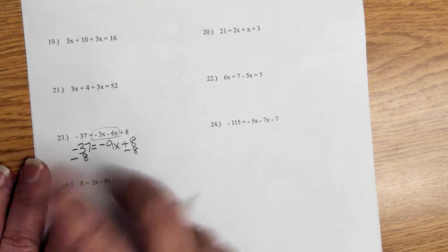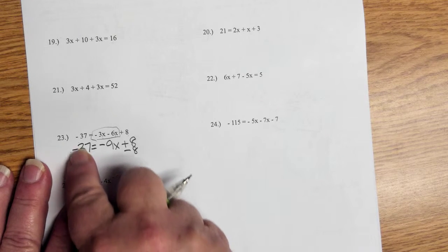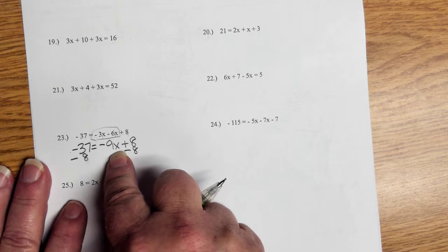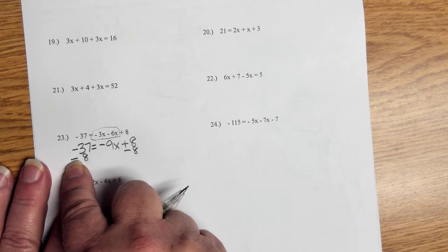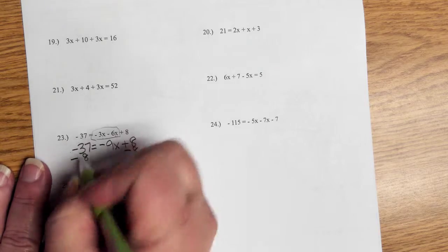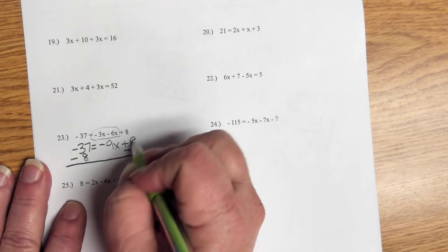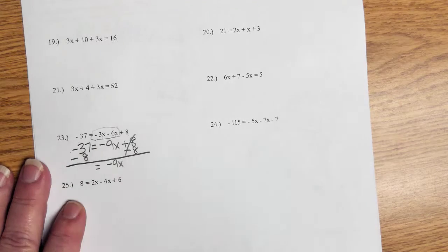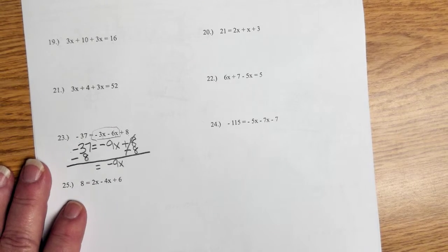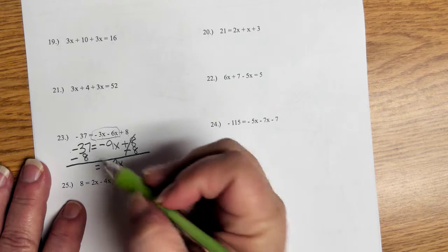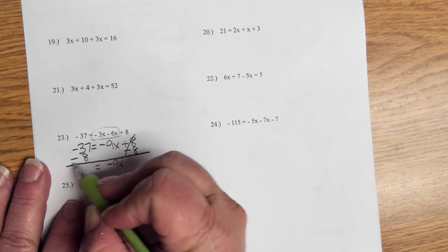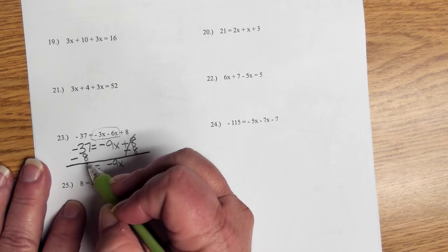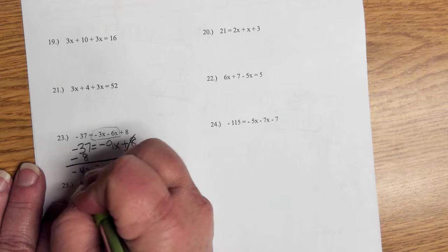Next, get rid of this on this side because it wants to be with its friends over there. You see, they're constants, they're friends. Variables only like to hang out with variables. Constants only like to hang out with constants. So we've got to get them on different sides of this equation. Those cancel those out. We get negative 9x equals—oh lord, for those of you who don't like this—negative 37 and negative 8. You combine two negatives, you get negative 45.